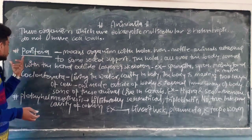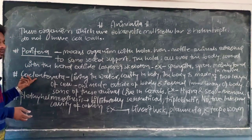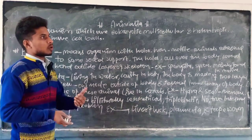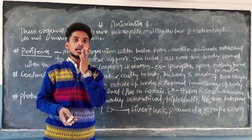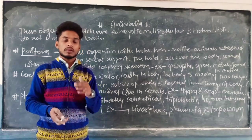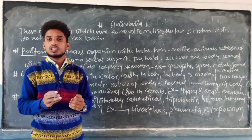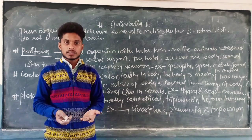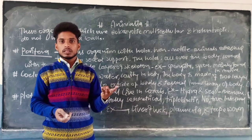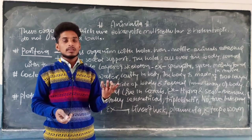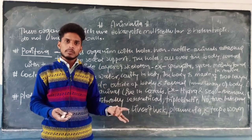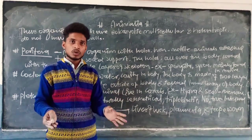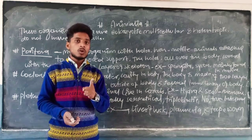Today we will complete three things: the first one is Porifera, the second one is Coelentrata, and the last one is Platyhelminthes. These are three groups under the other group which have no backbone. Invertebrate means those animals which do not have any backbone.